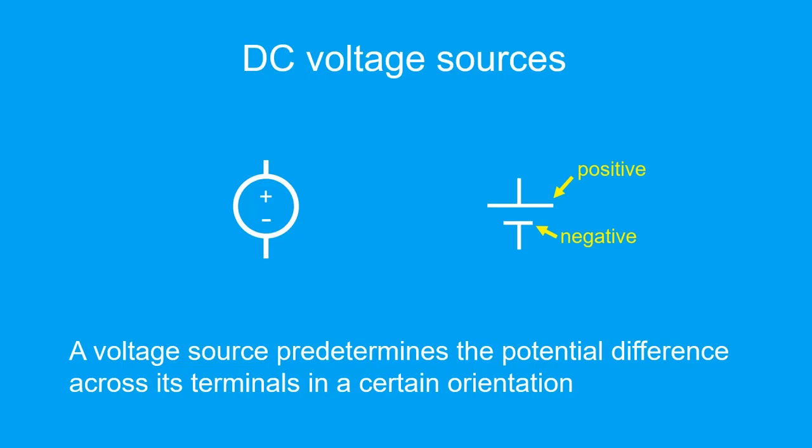What that means is that it forces the potential difference between its two ends to have a fixed value of whatever voltage value it was designed to prescribe. The orientation of the terminals does matter. The negative terminal indicates the node with a lower voltage value, and the positive terminal is the terminal with a higher voltage value.